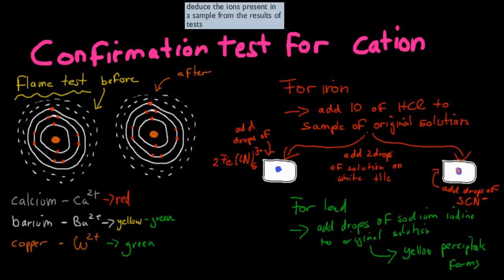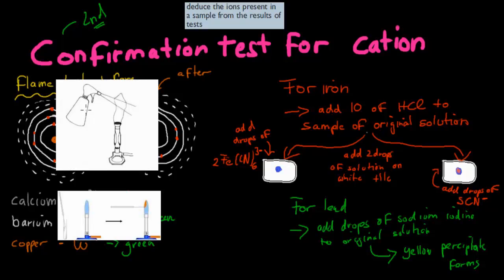Now we're going to look at some secondary tests, and a particularly important one is the flame test. The flame test is a confirmation test for cations — it's the second test you do after your primary test. In the flame test, you take a solution containing your cations — such as calcium, barium, or copper — and spray them over a fire. Different elements produce different flame colors: copper gives a green flame, and calcium gives a red flame.